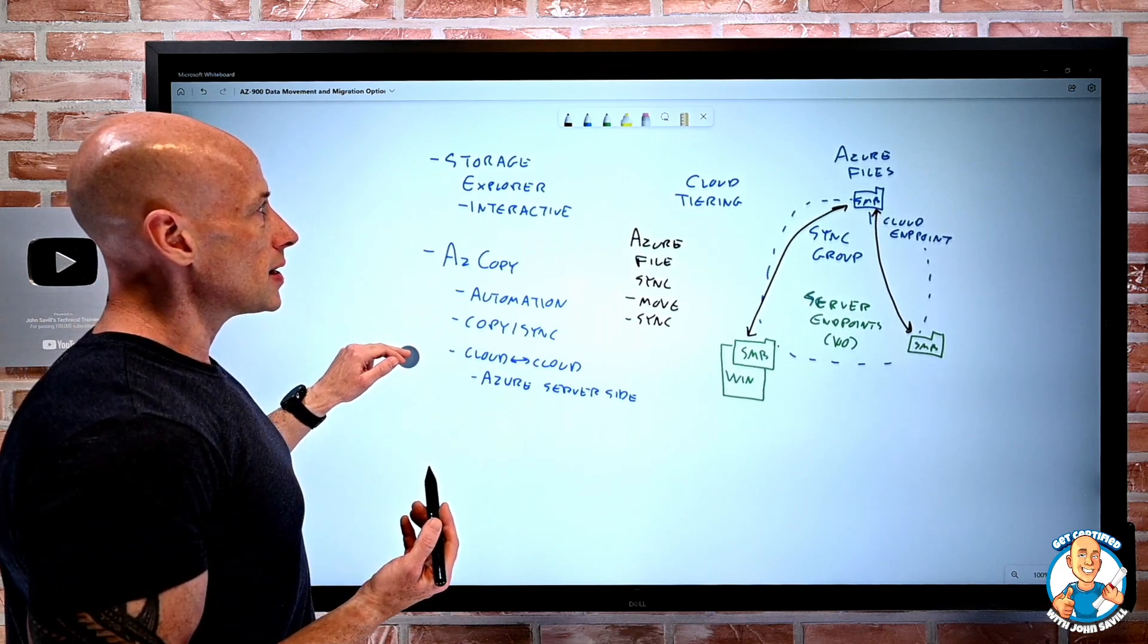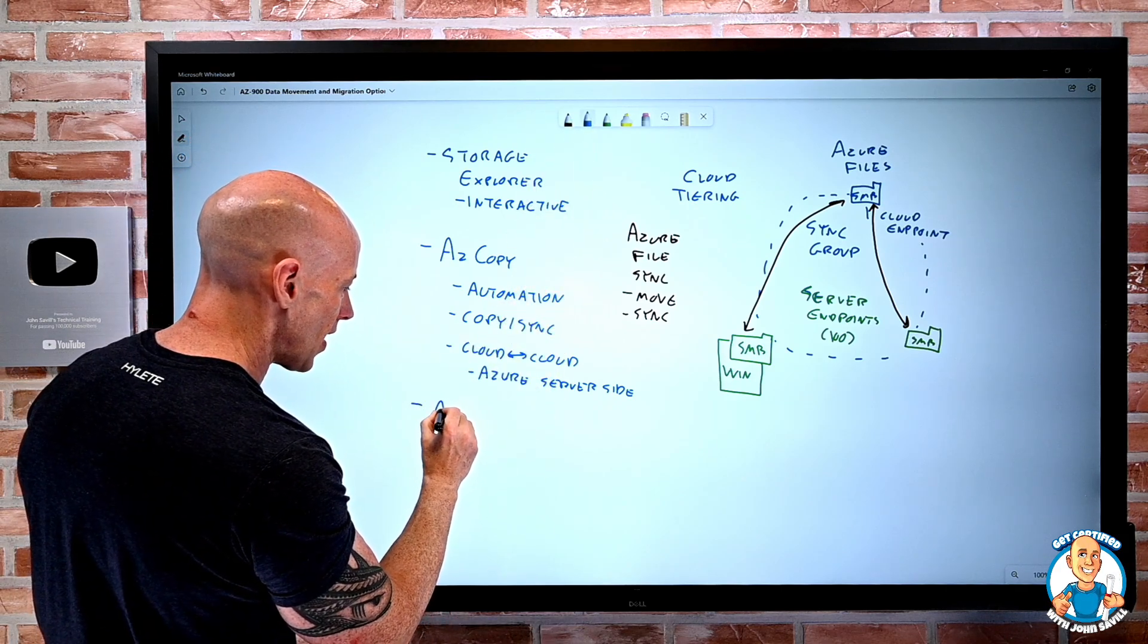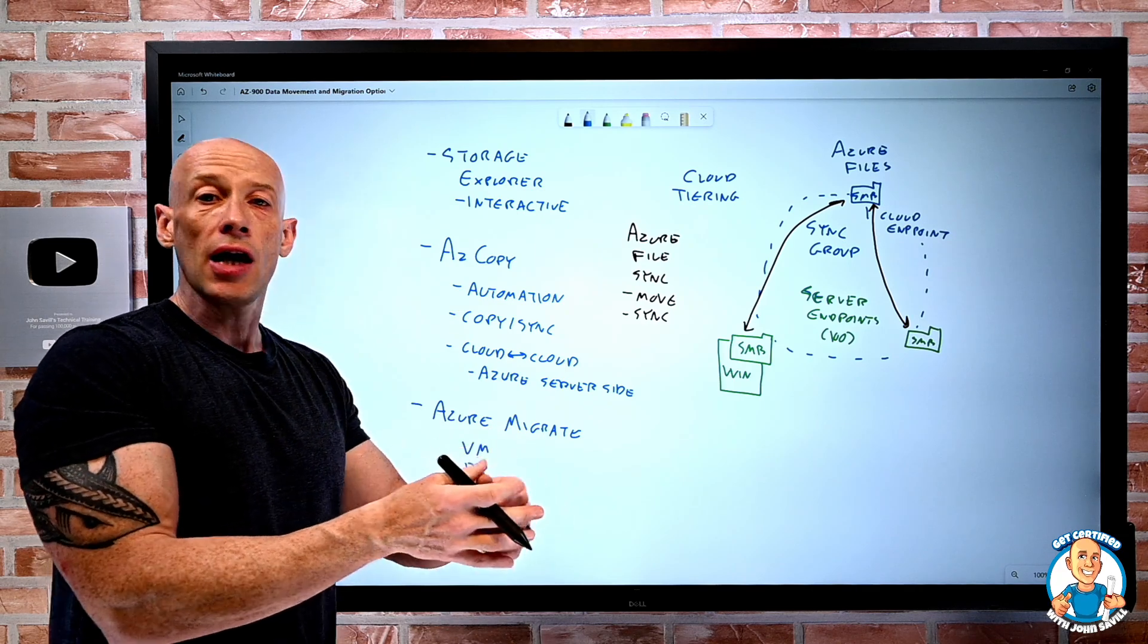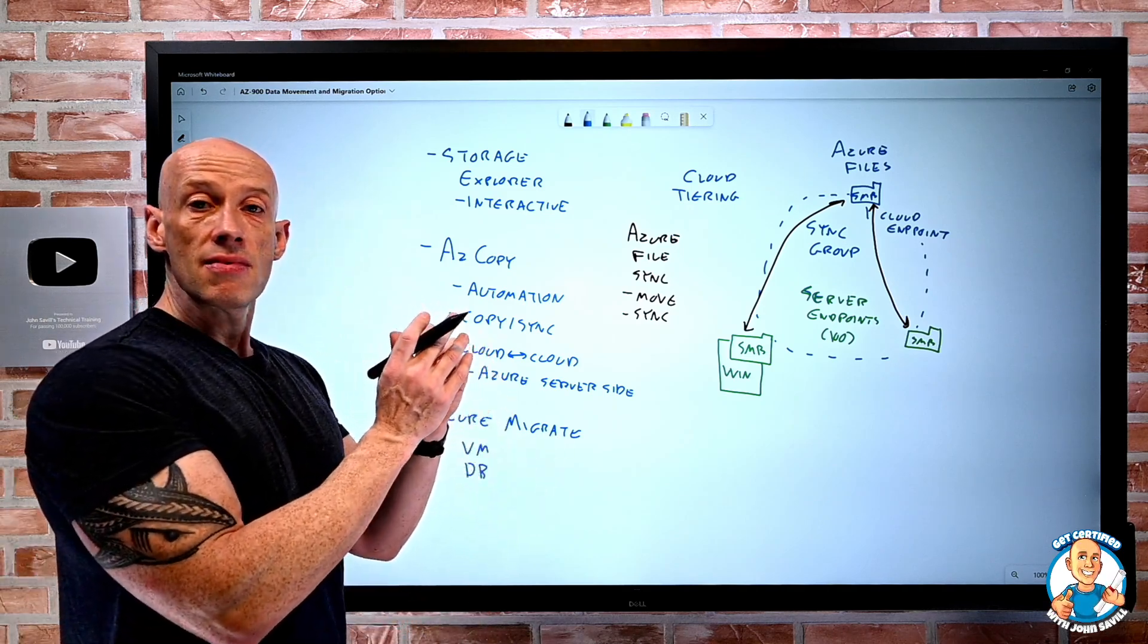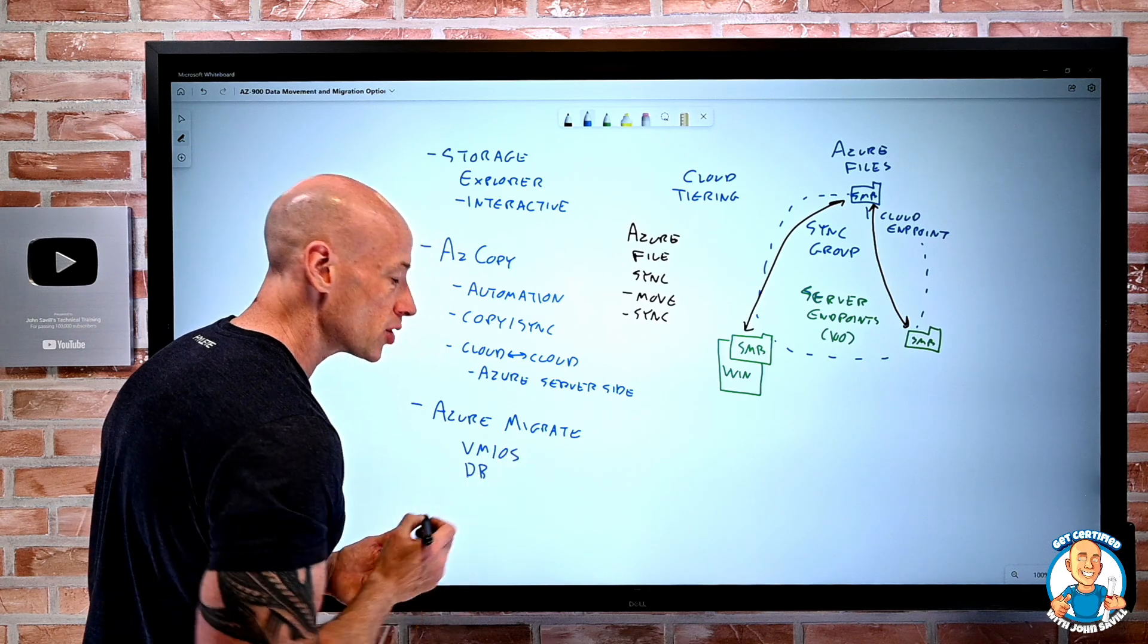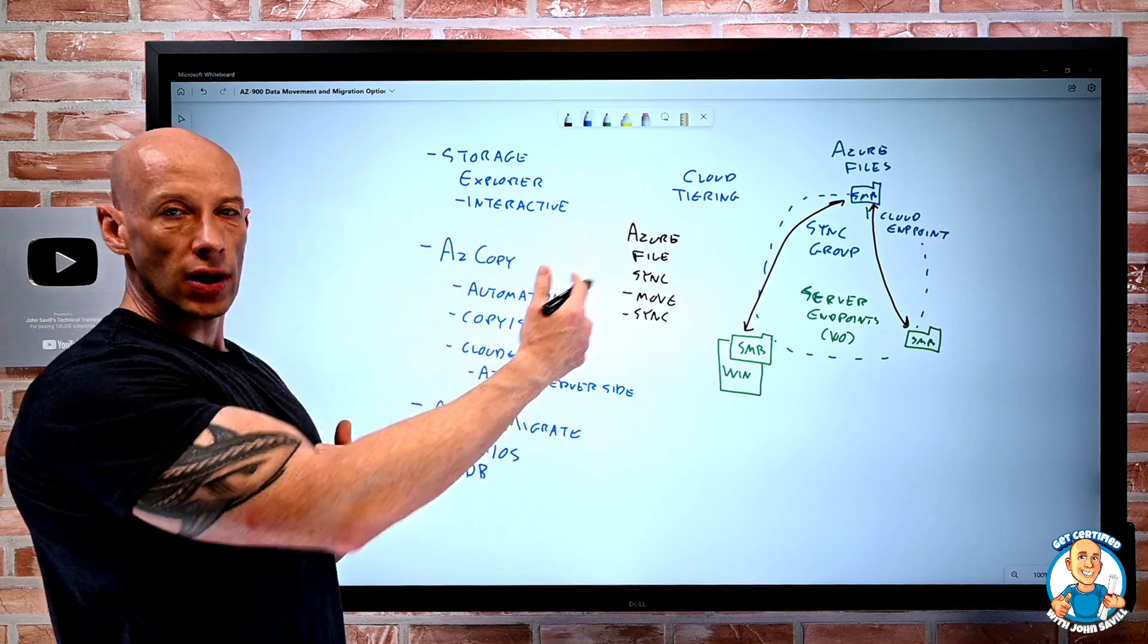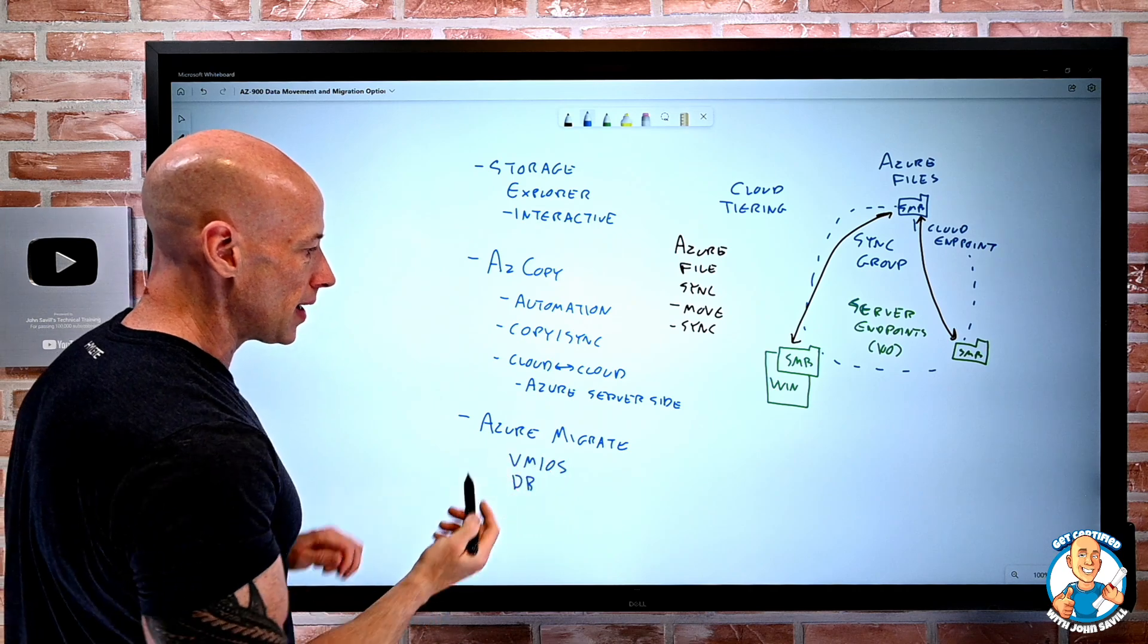What about if I want to move virtual machines? If I want to use entire virtual machines, maybe databases, we have Azure Migrate. Azure Migrate will actually go and do an investigation and assessment of the current usage, the current specification of that source workload. If it's a VM, it could be VMware, it could be Hyper-V, it could actually be a bare metal operating system. It doesn't even have to be a virtual machine. Assess it, recommend the right SKU to use in Azure, replicate it to Azure, and then it can cut over. For a database, does the same assessment, synchronization, and then I can do the cut over. So these are really powerful tools: Azure File Sync, Storage Explorer, AZ Copy, and Azure Migrate.